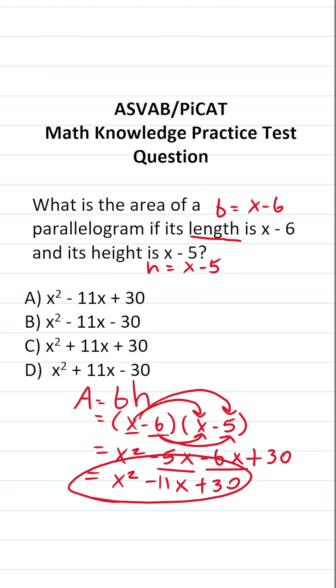So our answer to this one is going to be x squared minus 11x plus 30, which is going to be answer choice A.